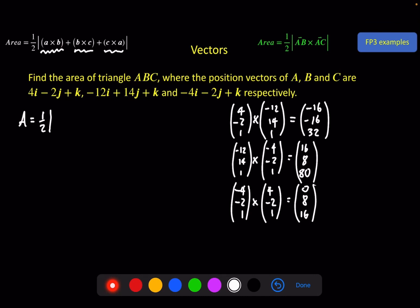So the area formula is half times the magnitude of these three answers added together. So the top element, -16 plus 16 plus 0 is a nice easy 0. Middle element, -16 plus 8 plus 8 is also a nice easy 0. And the bottom one, 32, 80, and 16 is 128. So the magnitude of that, 0 squared plus 0 squared plus 128 squared. And square root of that gives us half of 128, which is 64. It's an area, so we've got square units, whatever those units may be.